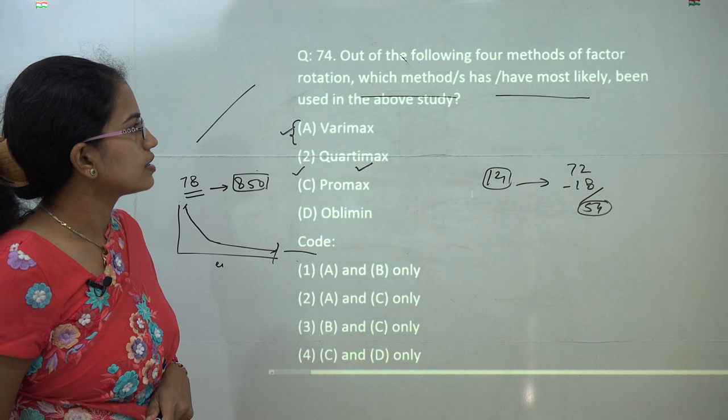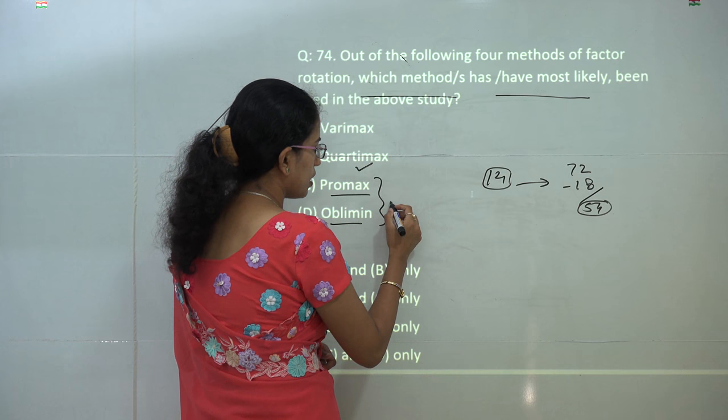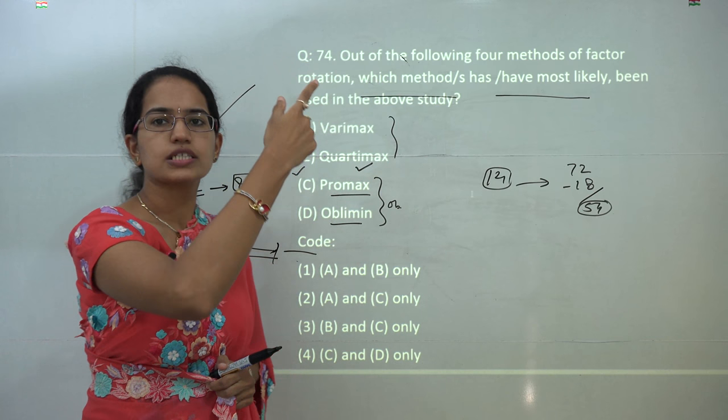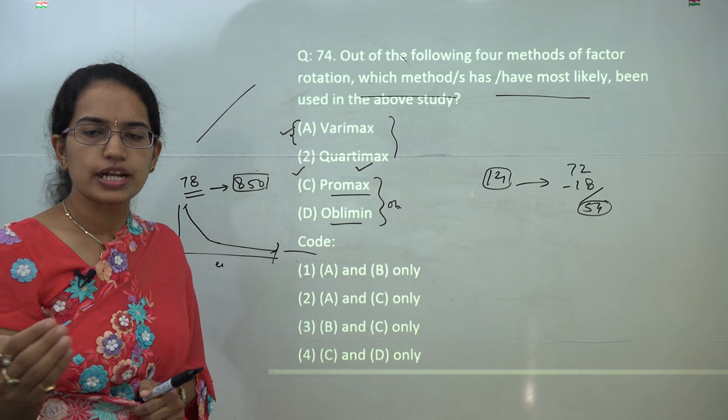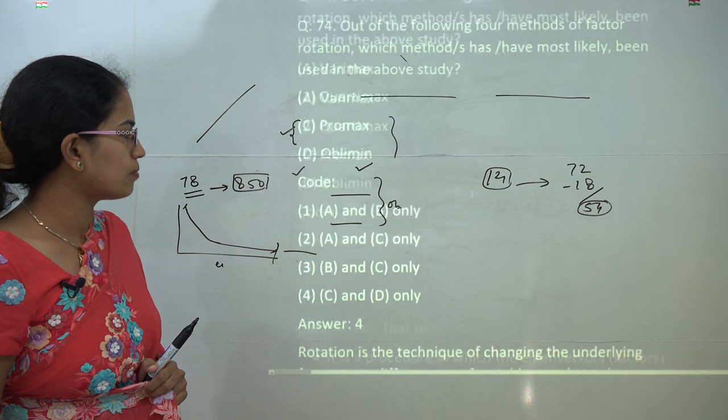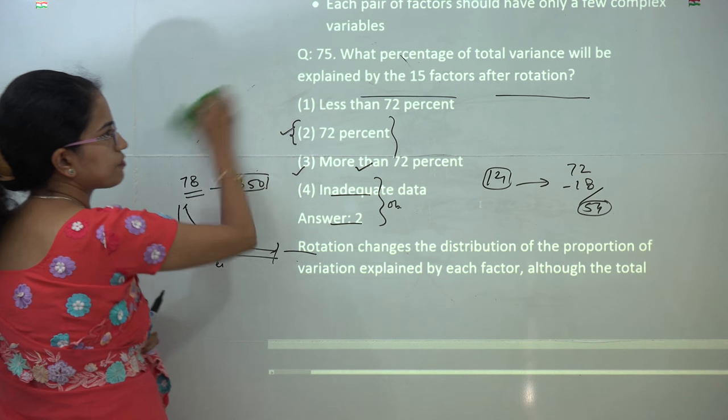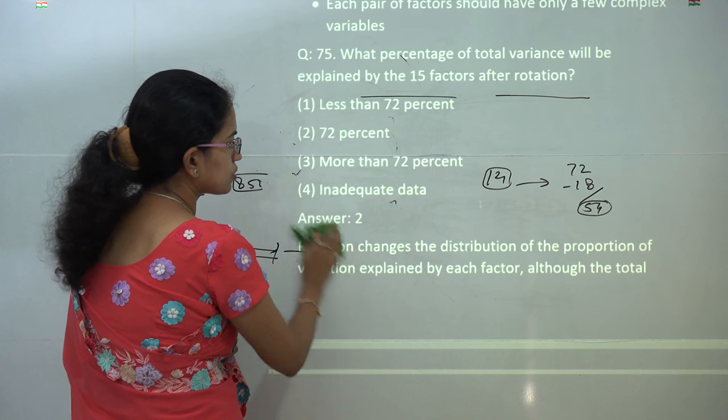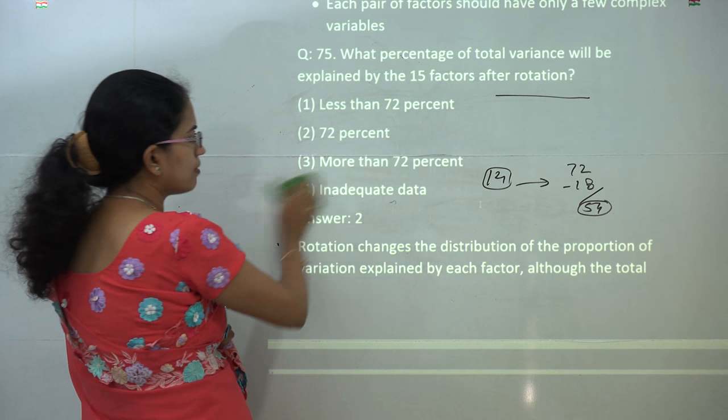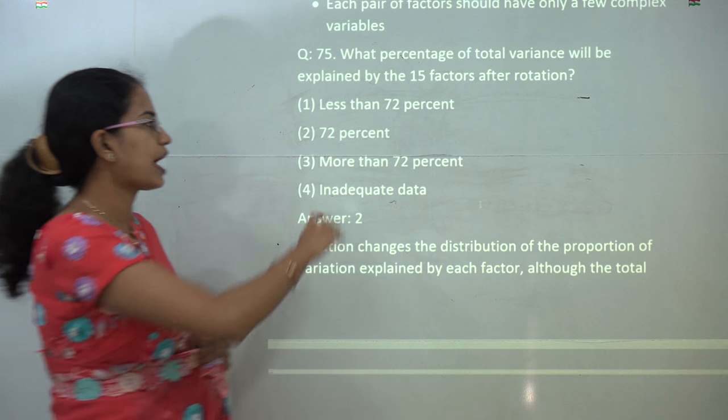The next question talks about a direct explanation of the scree plot by Cattell. So it shows the order of the eigenvalue on the x-axis and the actual eigenvalues on the y-axis. So you have 1 as the correct answer. The next question talks about the factors of rotation. Now the two methods, promax and oblimine, are the oblique methods, and the rest two are orthogonal. Orthogonal are uncorrelated and oblique are correlated. So since we said there are inter-correlations that have been found, we can apply only those which are correlated since the factors are rotated and are correlated. You have the oblique rotation that would apply, and the correct answer would be promax and oblimine. The next question talks about what percentage of the total variance would be explained by the 15 factors after rotation. Now whatever be the case, the total variance would remain the same. The rotation changes the distribution of the proportion. So you have the correct answer would be 72% only, because the total variance would remain the same. So you would have the answer as 72%.